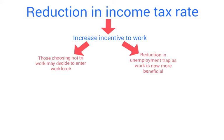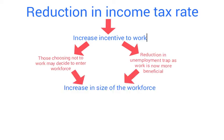One policy the coalition government made a big play on is the increase in the personal allowance for income tax — the amount you can earn before paying any income tax at all. As this video was made, that was £10,500. That provides an incentive for those previously living on benefits to re-enter the workforce. The combined impact of these effects will be to increase the size of the workforce, increase the amount of factor production available, and therefore increase long-run aggregate supply.